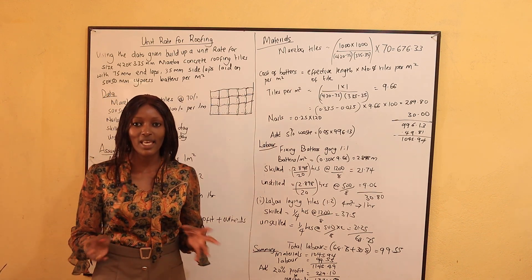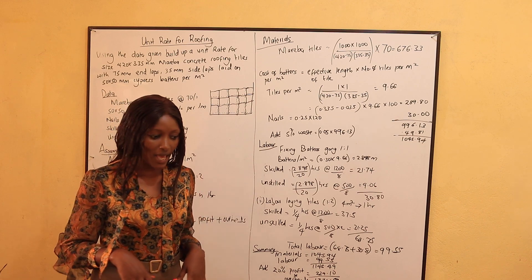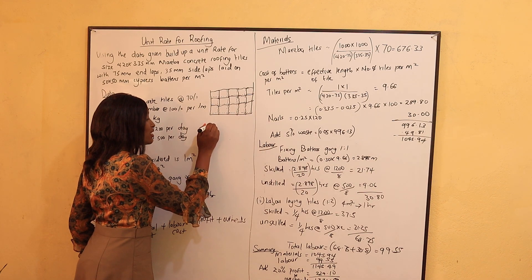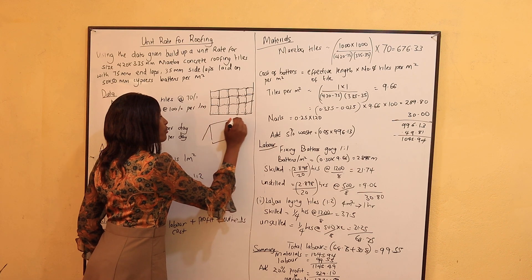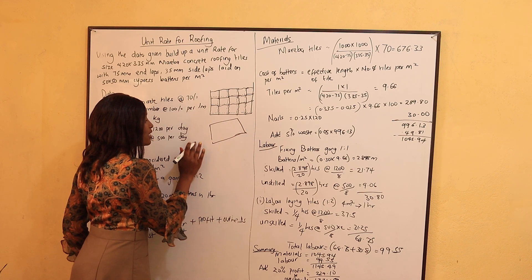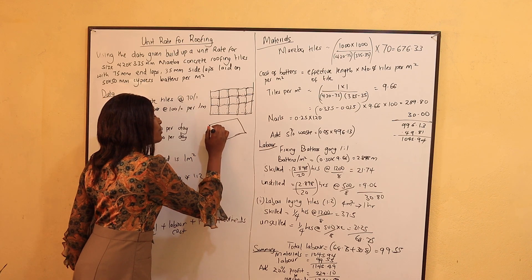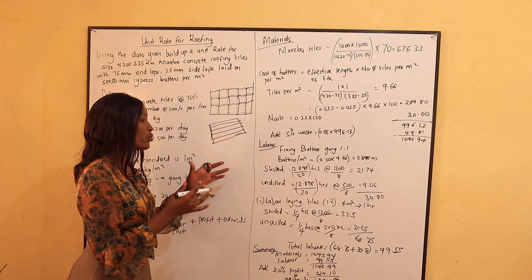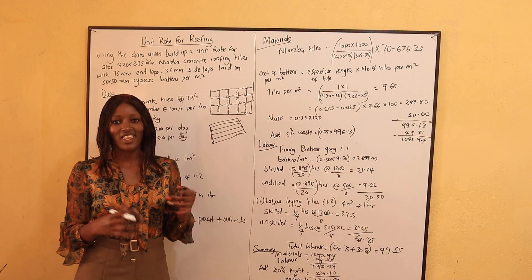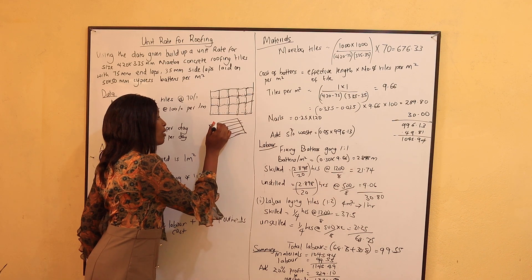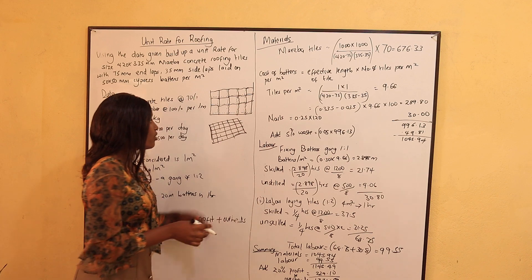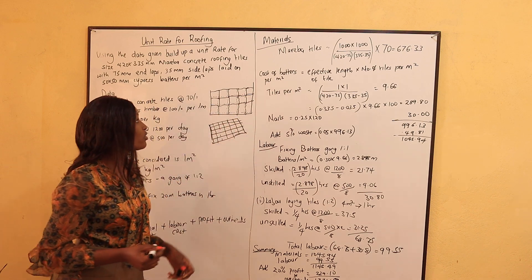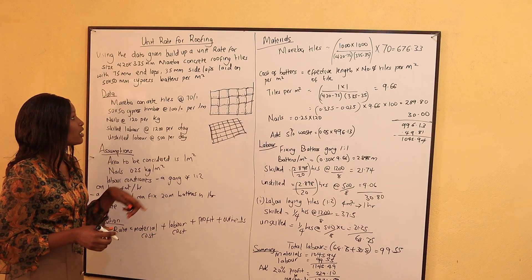In a roof, whenever we have tiles, we usually have buttons. Buttons are frames — lines that sit on the roof structure. Imagine this is a gable roof that slopes like this. We have buttons running across the slope so that you can lay the tiles on them. The tiles go along the slope so that the water can fall off the roof. These buttons are 50 mm by 50 mm cypress.